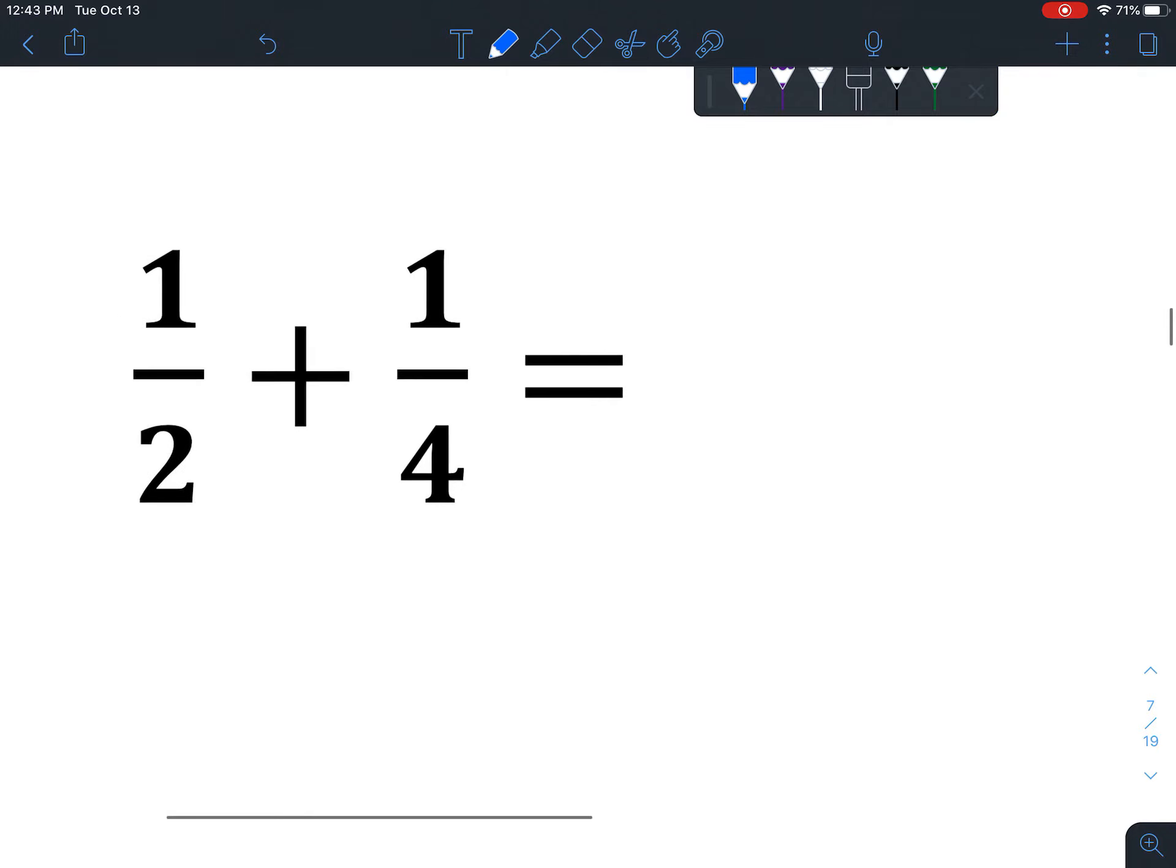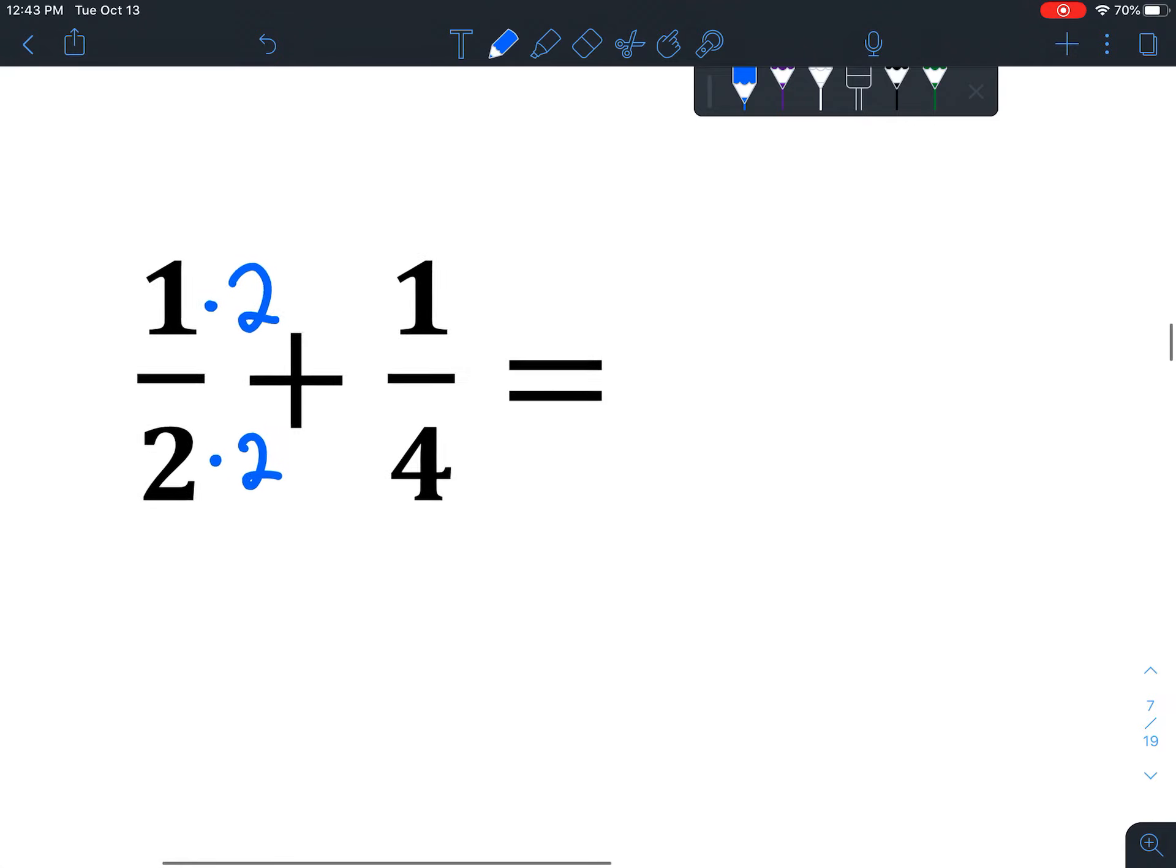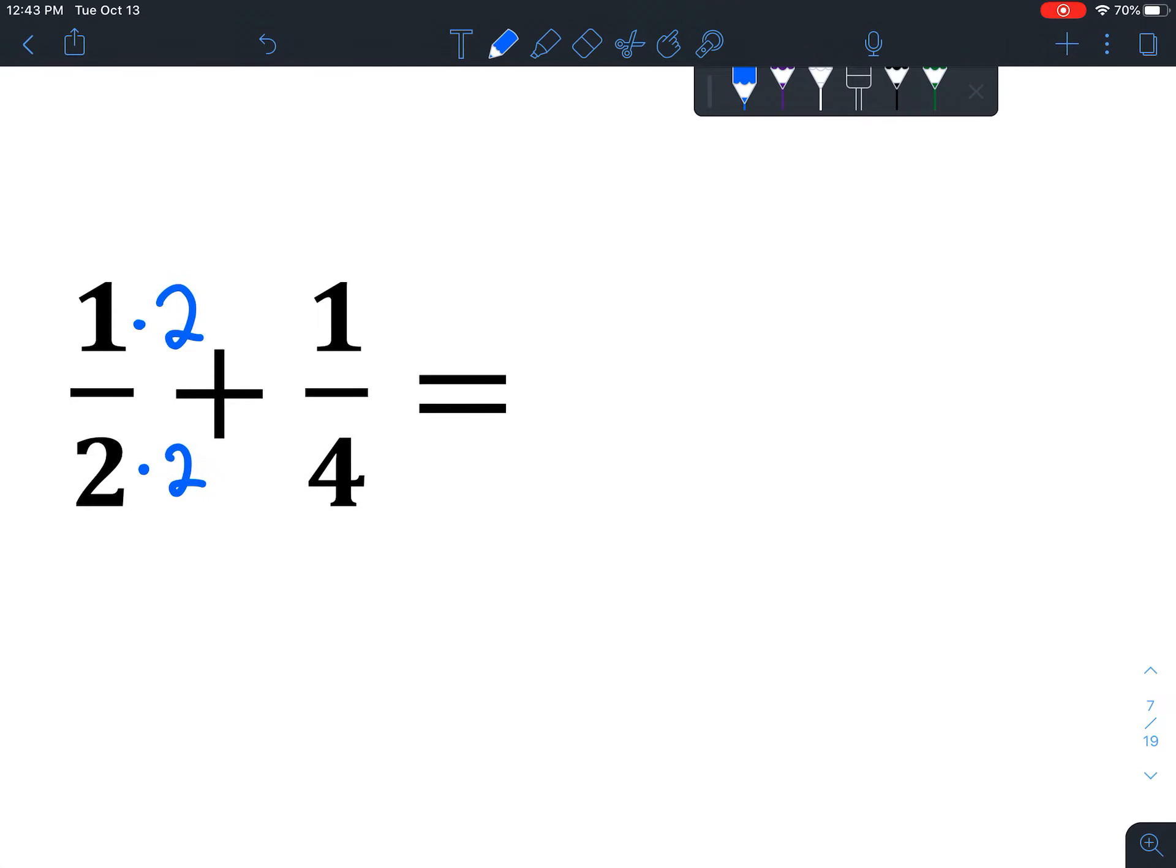1 half and 1 fourth. So always take your smallest number and ask yourself, can it be multiplied to get the larger one? And yay, in this case it can. So let's do that. We're going to multiply this times 2. Whatever you do to the bottom, you have to do to the top. Now let's rewrite this. 1 times 2 is 2. 2 times 2 is 4. Plus 1 over 4. Just rewrite it.